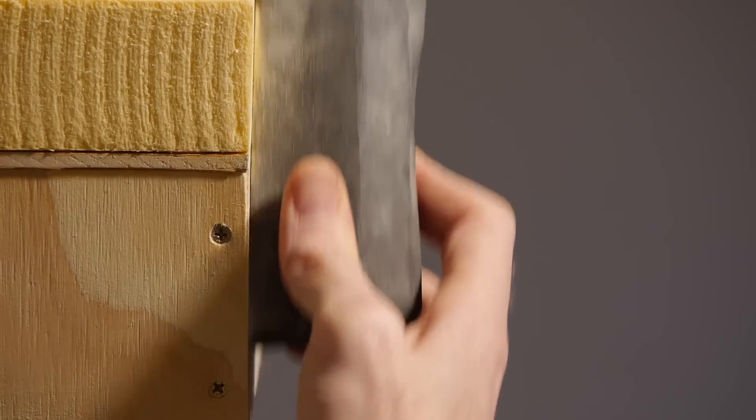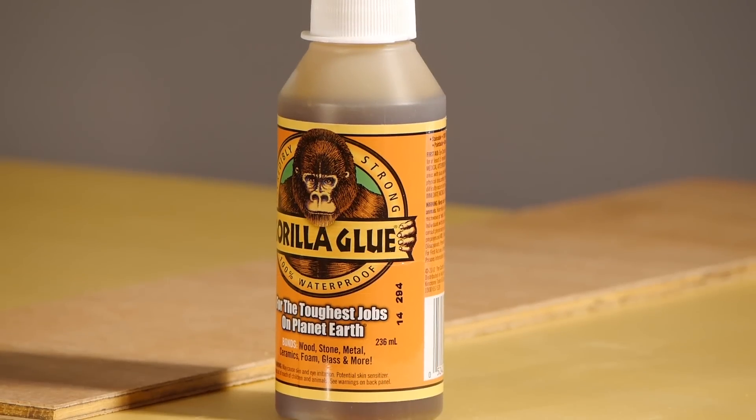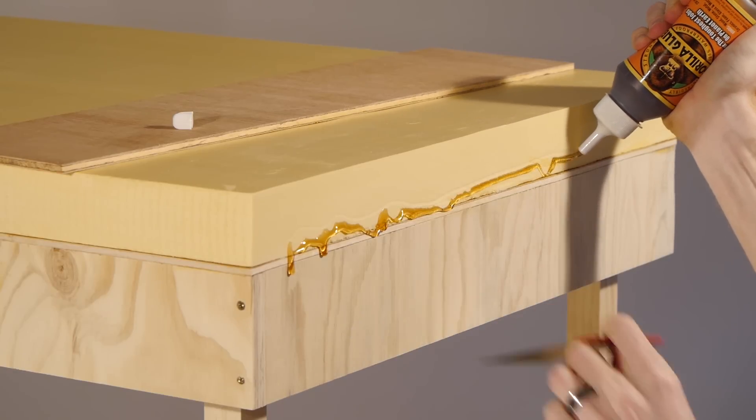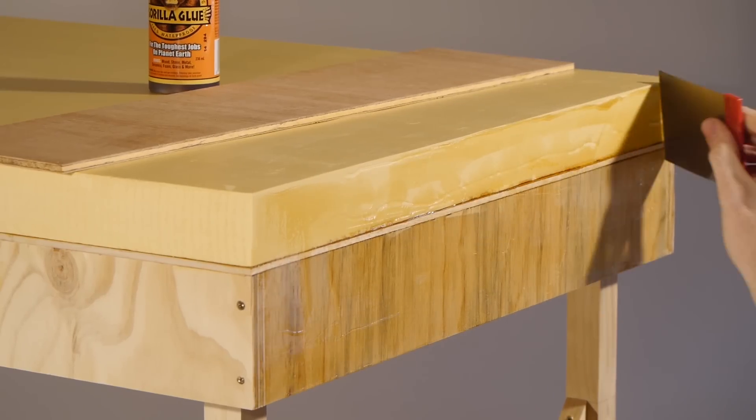I first sand back any excess foam, and for the glue I'll use Gorilla Glue. It's very strong and will expand into any gaps or crevices in the foam and wood, ensuring the bond is strong.